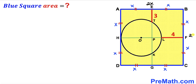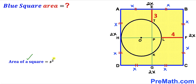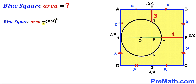So therefore each side length is going to be 2X. Since we are interested in calculating the area of this blue square ABCD, let's recall the area of a square formula: area equals S squared, where S is the side length. In our case the side length is 2X, so the area of blue square ABCD is going to be (2X)², which simplifies to 4X². So the blue square area equals 4X², and now our task is to find the value of X².